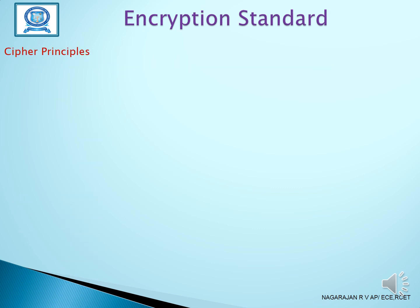Now let us see the Encryption Standard — Data Encryption Standard, that is the DES algorithm. Before that, we want to discuss the basic principles of Cipher Principles. Cipher text means we need to convert the original message into a converted message; it is called a Cipher. In Cipher, we convert the cipher text using two principles: one is a Stream Cipher and another one is a Block Cipher.